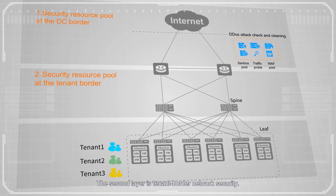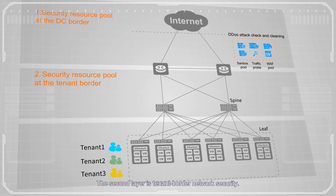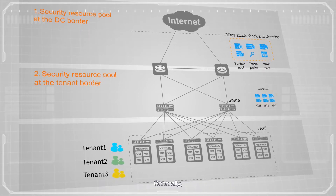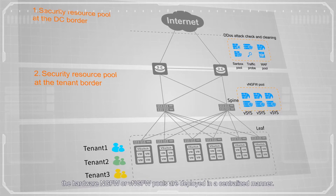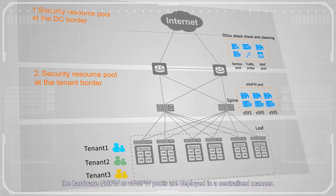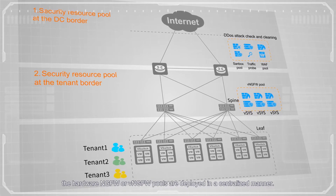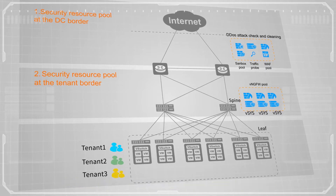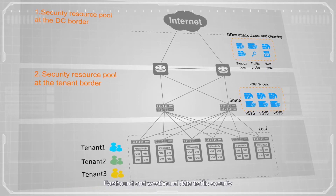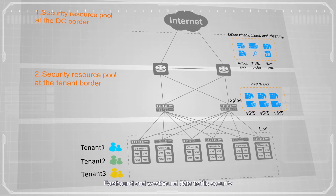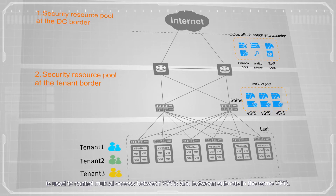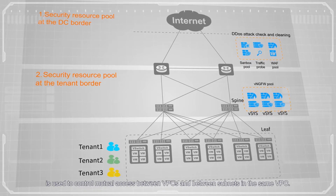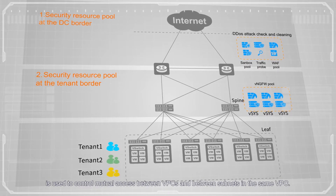The second layer is tenant border network security. Generally, the hardware NGFW or VNGFW pools are deployed in a centralized manner. Eastbound and westbound data traffic security is used to control mutual access between VPCs, and between subnets in the same VPC.